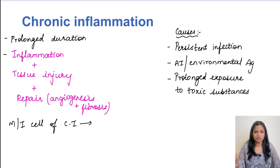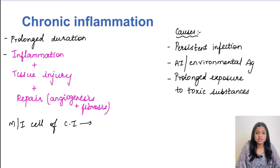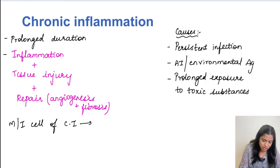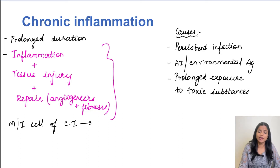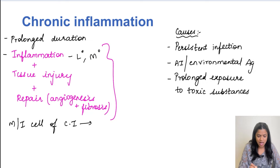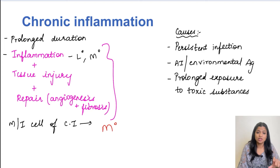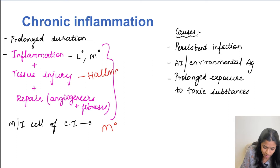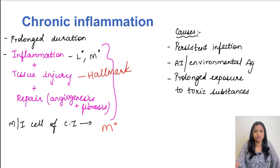Chronic inflammation is a type of inflammation which is of delayed onset and of a prolonged duration. In this type of inflammation we have inflammation, tissue injury and repair taking place simultaneously. Tissue injury is the hallmark of chronic inflammation.